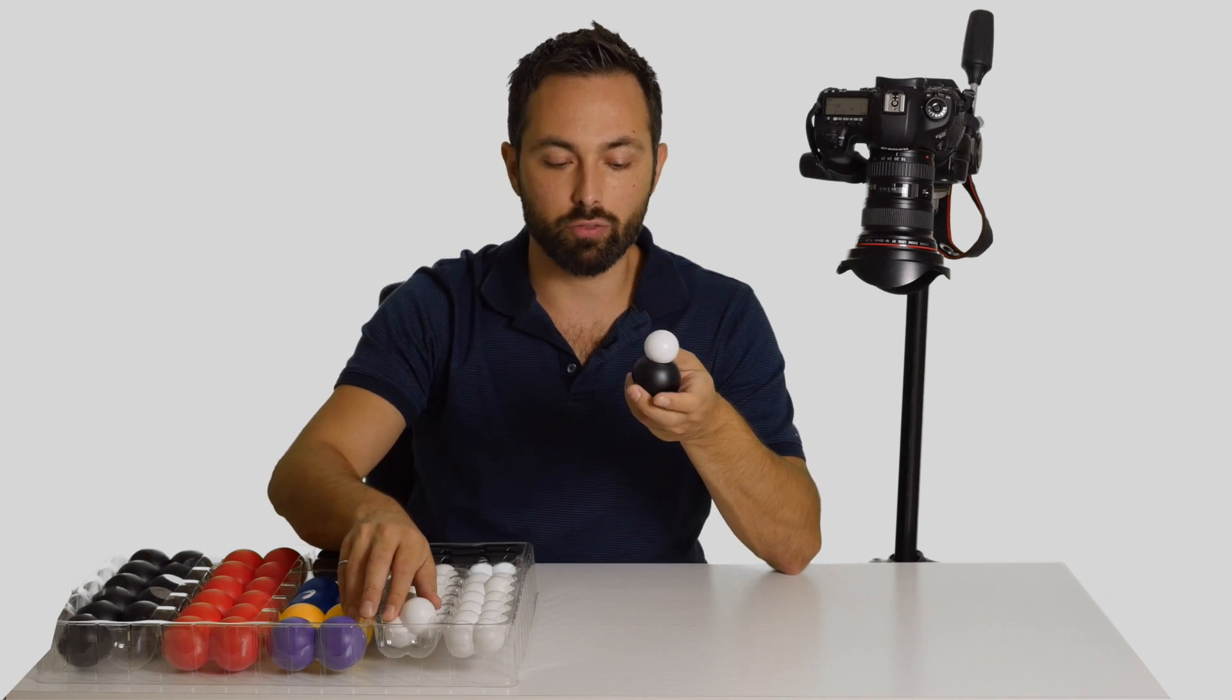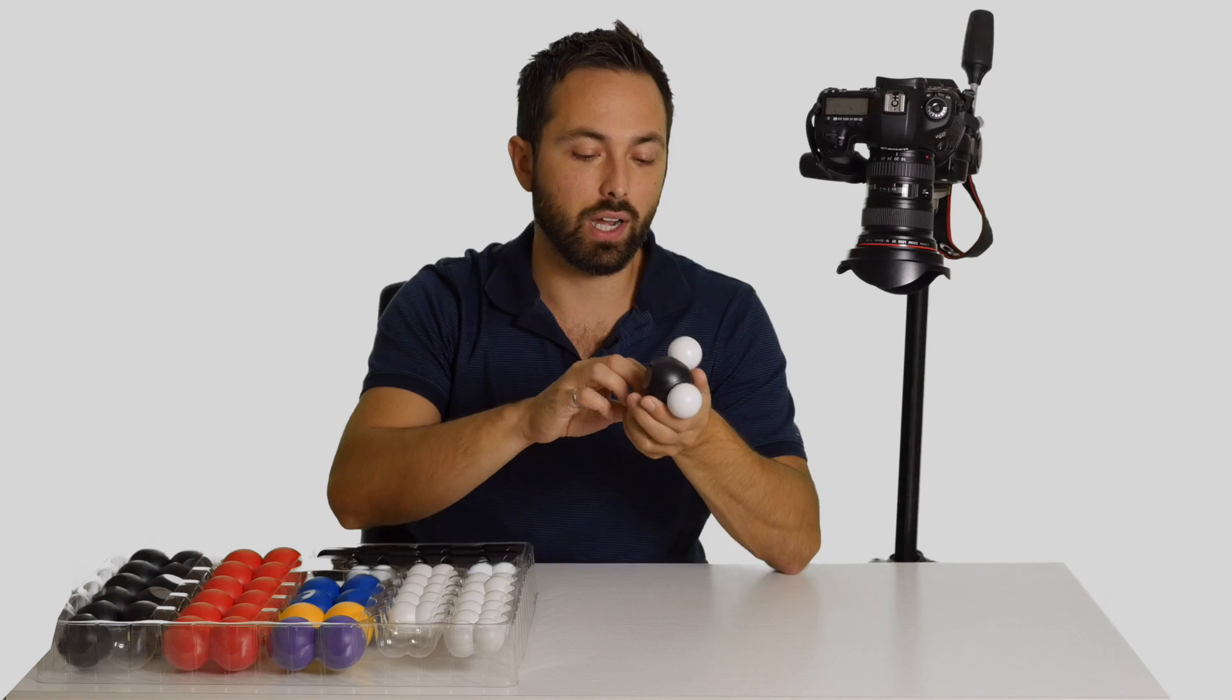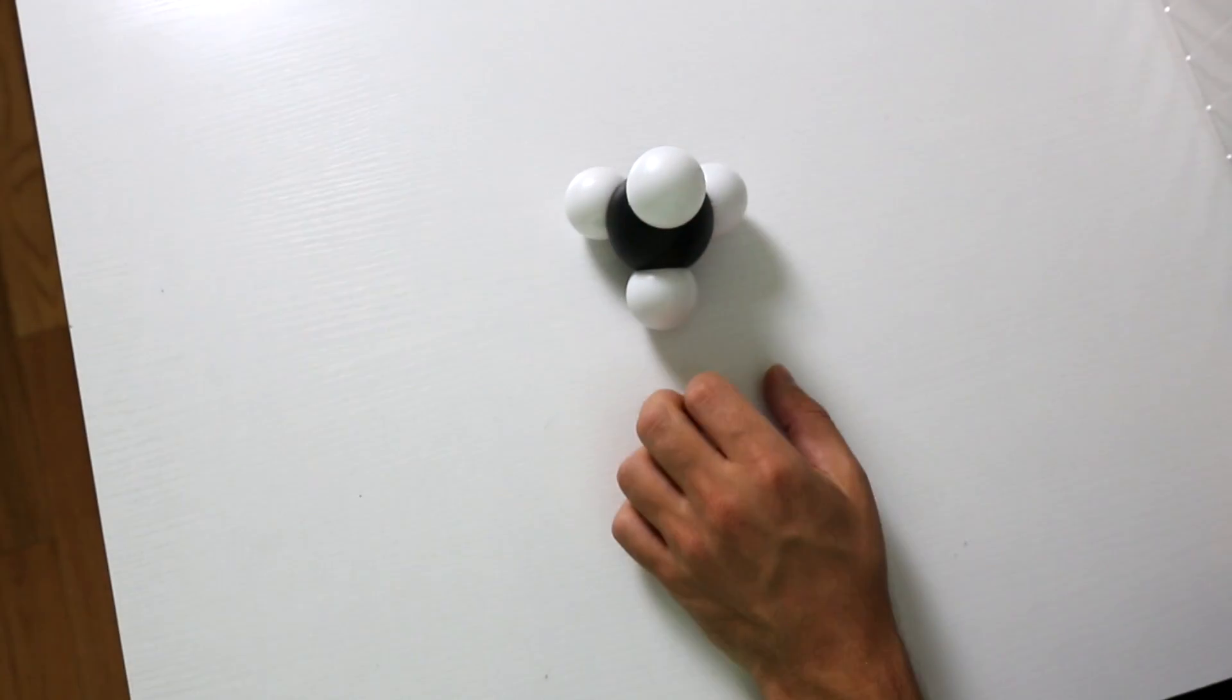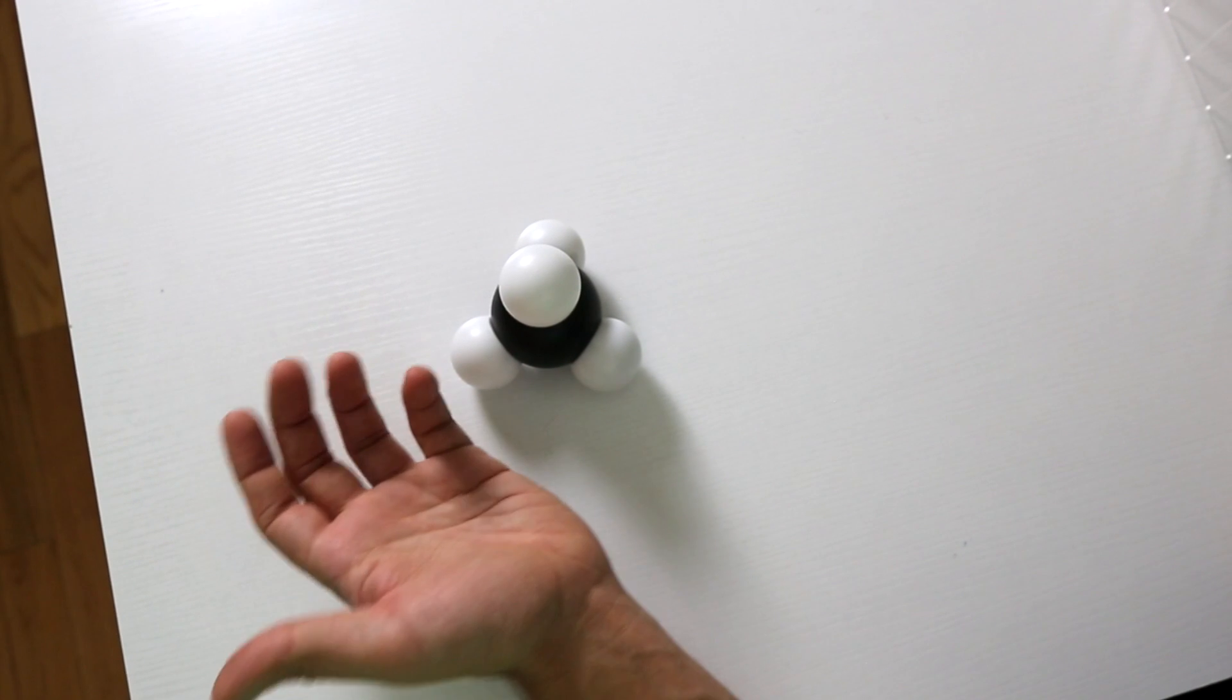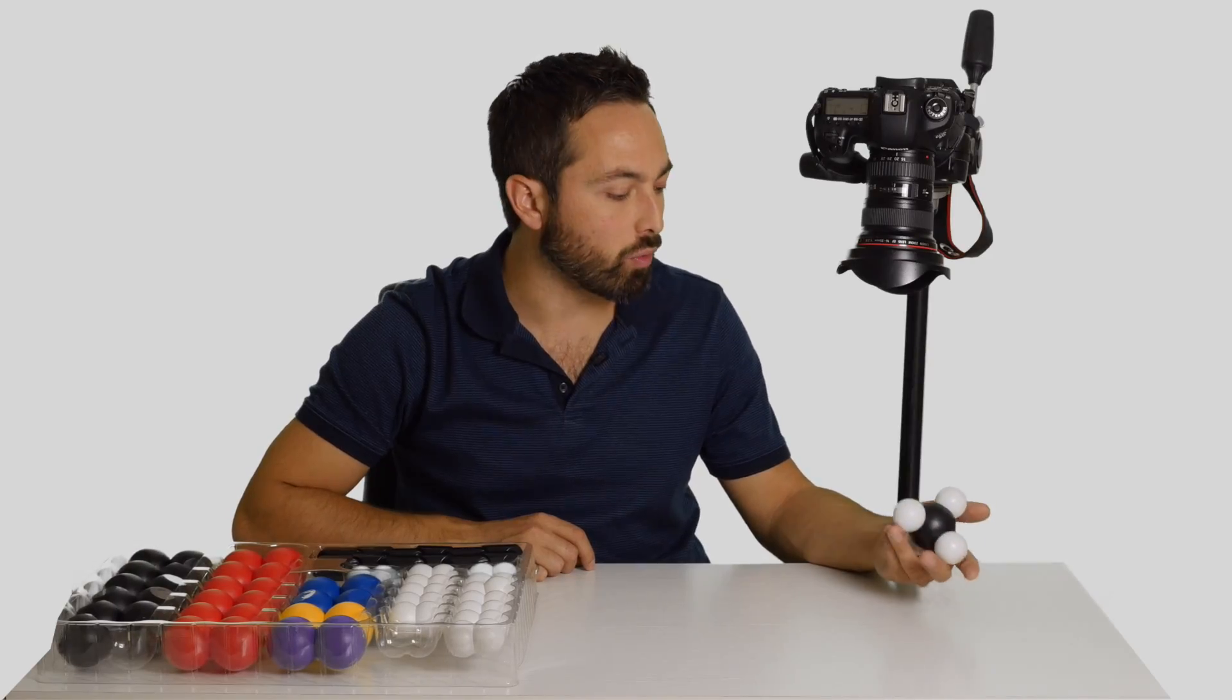Got my carbon atom and four single bonded hydrogens. Now this is a nice symmetric molecule. Any way you look at it, it basically looks the same, any way you rotate it.